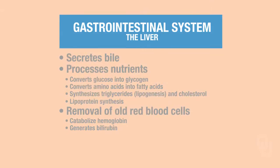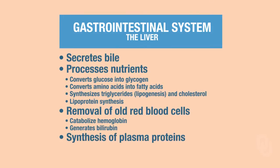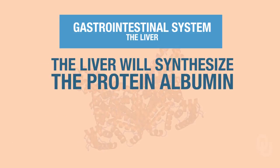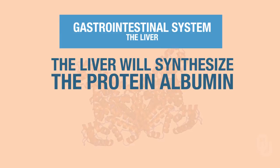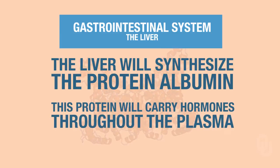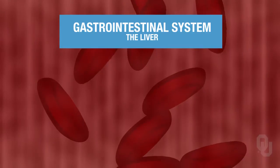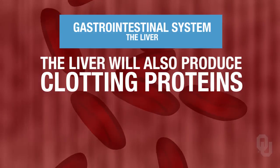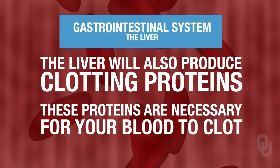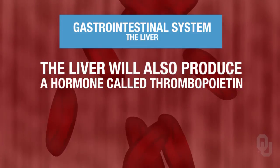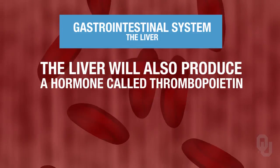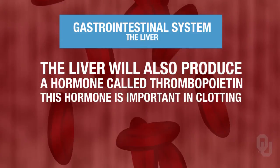The liver also synthesizes plasma proteins. For example, it synthesizes albumin — a protein that carries hormones throughout the plasma. The liver also synthesizes clotting proteins, which are proteins you'll need for your blood to clot. Additionally, the liver synthesizes a hormone called thrombopoietin, which is important in clotting.